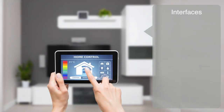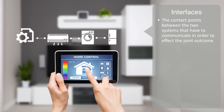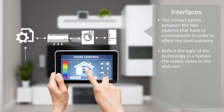Interfaces like the dashboard on our car, the signs in an airport, or the graphical user interface of your computer are the contact points between the two systems. They both have to communicate in order to affect the joint outcome. Interfaces are the way of communicating to people the set of procedures required for operating the technology. They reflect the underlying logic and algorithms through which the technology functions, but are expected to do so in a fashion that makes sense to the end user.